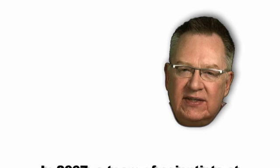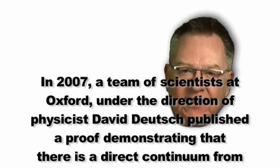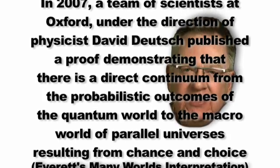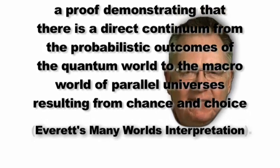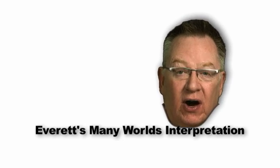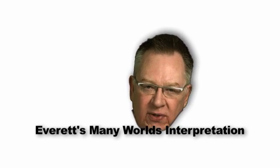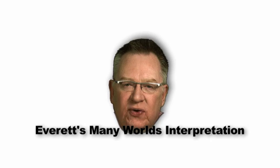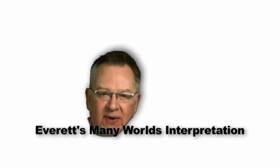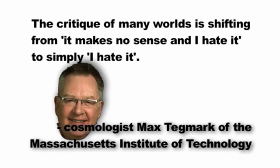Here's another continuum that ties into this way of visualizing. In 2007, a team of scientists at Oxford under the direction of physicist David Deutsch published a proof demonstrating that there is a direct continuum from probabilistic outcomes of the quantum world to the macro world of parallel universes resulting from chance and choice — which is Everett's many-worlds interpretation. If every decision I make, every decision someone else makes, and every random outcome where something just happened, are all creating different versions of our universe, this seems like a mind-boggling amount of universes. And yet, the many-worlds interpretation is gaining ground among serious scientists because it answers so many questions about how our universe works. As cosmologist Max Tegmark of MIT has been quoted to say, the critique of many worlds is shifting from 'it makes no sense and I hate it' to simply 'I hate it.'